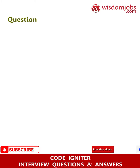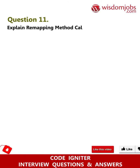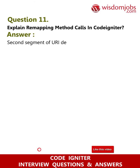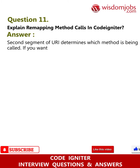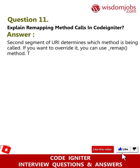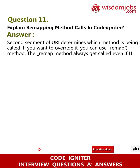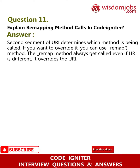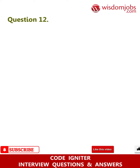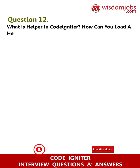Question 11: Explain remapping method calls in CodeIgniter. Answer: The second segment of the URI determines which method is being called. If you want to override it, you can use the _remap() method. The _remap() method always gets called even if the URI is different — it overrides the URI.